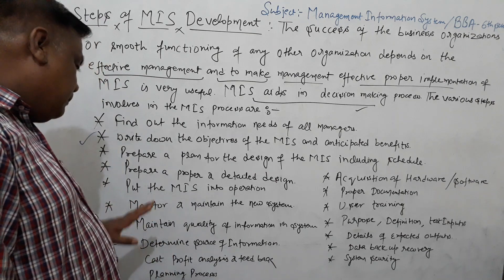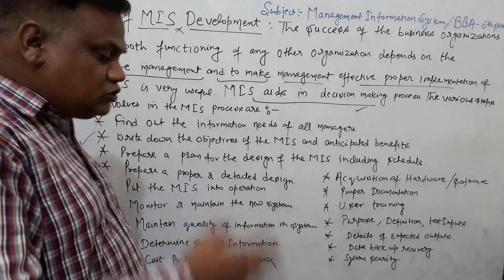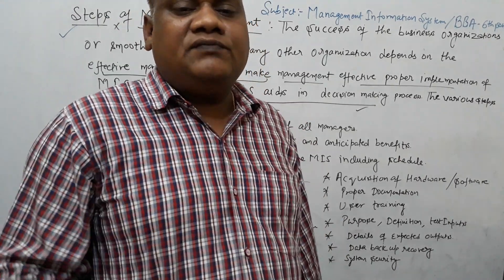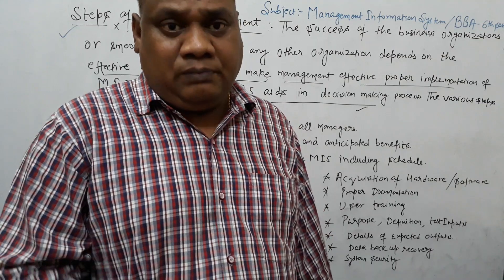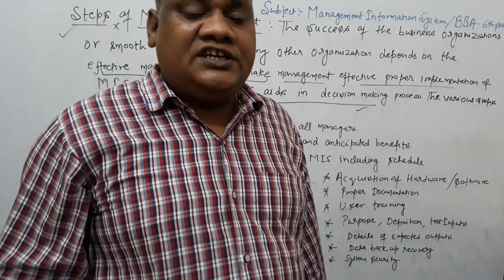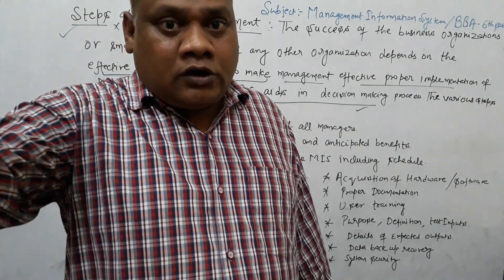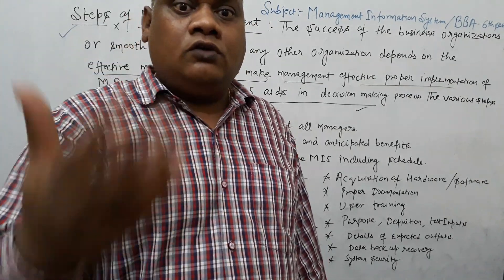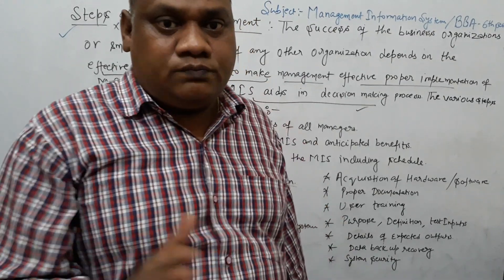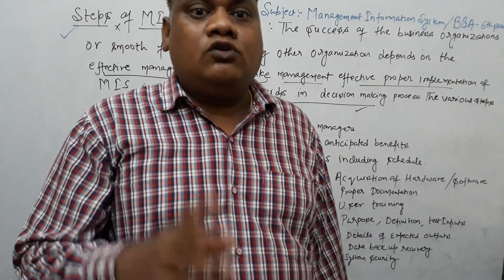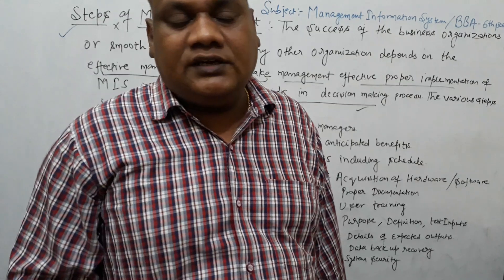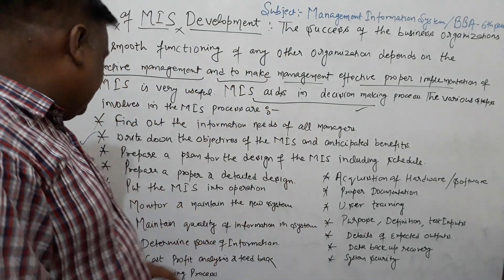Cost-benefit analysis is the most important step in MIS. We review our financial statements, including assets and loss accounts after the close of one financial year, and prepare a proper balance sheet as part of the planning process.